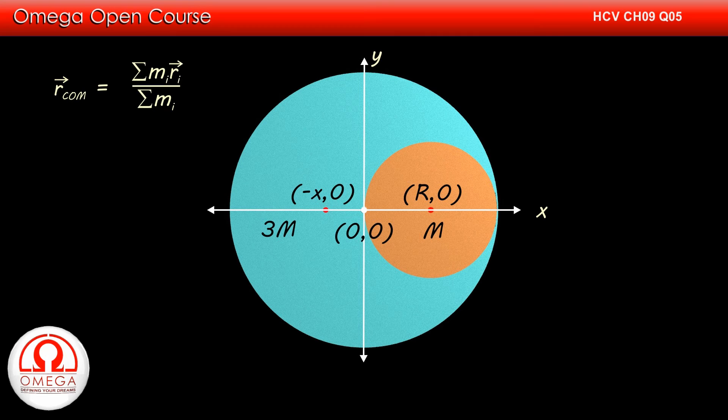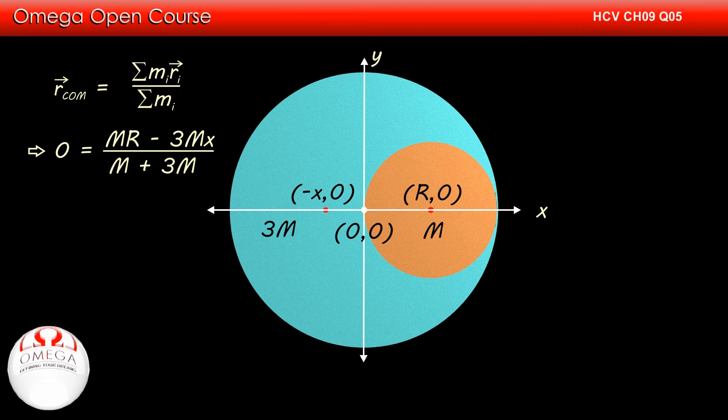The position of center of mass is given by summation of mass into distance divided by summation of mass. Putting the values, we get 0 equals m times R minus 3m times x divided by m plus 3m. Please note that since the center of mass of the combined system is at origin, LHS is 0.